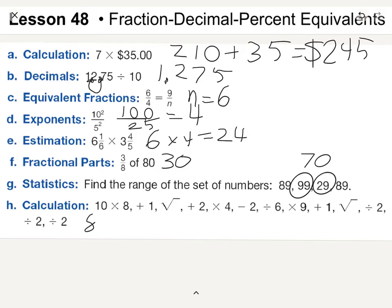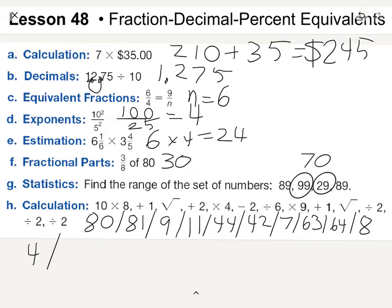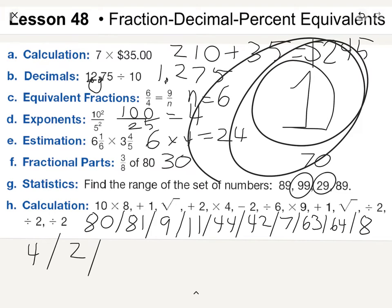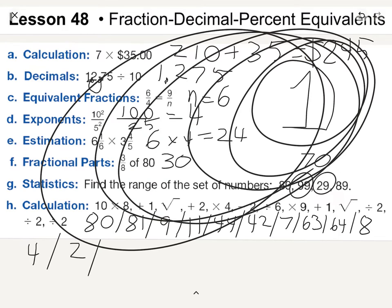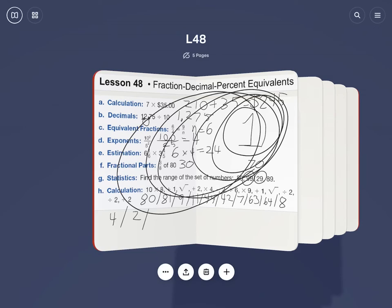Then, 8 times 10 is 80, plus 1 is 81. The square root would be 9, plus 2 would be 11, times 4 would be 44, minus 2 would be 42, divided by 6, minus 6, plus 1 is 64, square root is 8, divided by 2 is 4, divided by 2 is 2, divided by 2 is 1. All that work for 1.